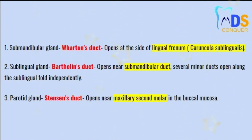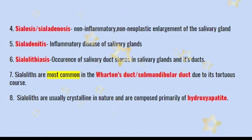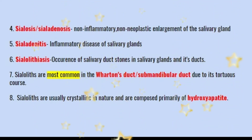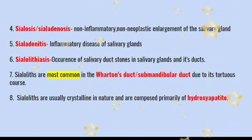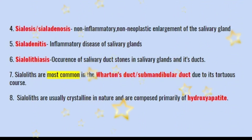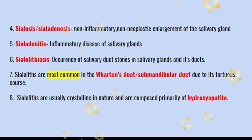Now we shall see a few important terminologies. Point 4: sialadenosis is the non-inflammatory, non-neoplastic enlargement of the salivary gland. Point 5: sialadenitis is an inflammatory disease of salivary glands. Point 6: sialolithiasis is the occurrence of salivary duct stones in salivary glands and their ducts.